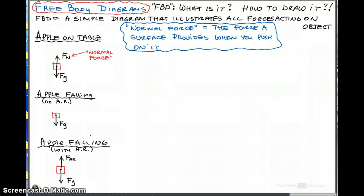So that's an example. Three examples of an apple. Apple on a table. Apple falling, no air. Apple falling with air resistance present. So let's look at a couple of other things.